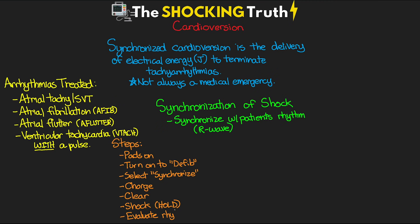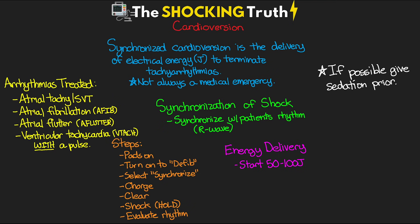Once you've given the shock, evaluate the rhythm and check if the patient has converted out of that tachyarrhythmia. For cardioversion, we're often using less energy, typically starting with 50 to 100 joules for adults. Another big difference compared to defibrillation is that your patient will oftentimes be awake, and getting shocked really hurts. If possible, sedation should be used prior to delivering the shock. For AFib you probably have time to give sedation, but for VTAC with a pulse where the patient is losing consciousness, you may need to shock them quickly without time for sedation.